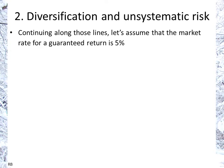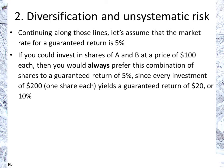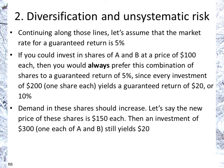Now let's assume the market rate for a guaranteed return is 5%. If you want to invest in something and get a guaranteed return — say a treasury bond — you get 5%. Well, you could invest $100 in share A and $100 in share B, and you would always prefer this combination to a guaranteed 5% return since this combination gives you a guaranteed 10%. Demand for these shares would increase. You could technically borrow at the risk-free rate of 5%, invest that money in A and B, and earn a positive return at zero cost.